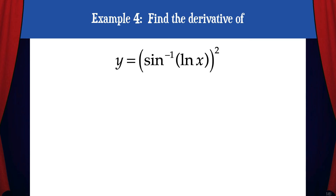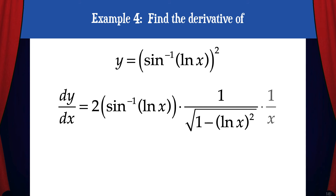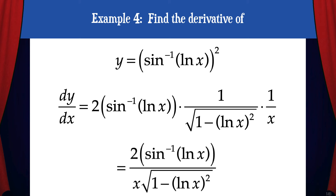Example 4: Find the derivative of y equals the quantity of sine inverse of ln x, squared. To solve this we'll need to apply the chain rule twice. First we'll apply the power rule, which gives us 2 times the quantity of sine inverse of ln x. Then we're going to multiply by the derivative of the inside function, which is 1 over the square root of 1 minus the quantity of ln x squared. Then we have to multiply by the derivative of ln x, which is 1 over x. This is an acceptable answer, but we could clean up the problem a little bit, as shown here.